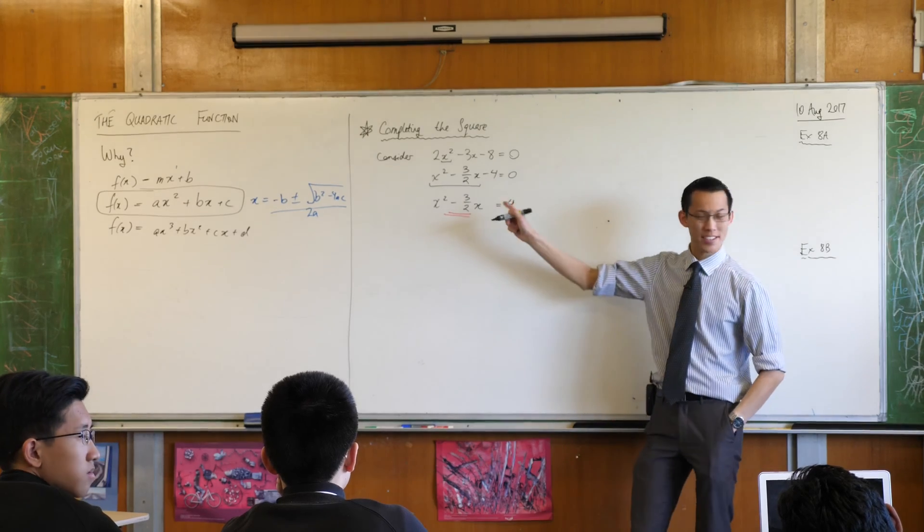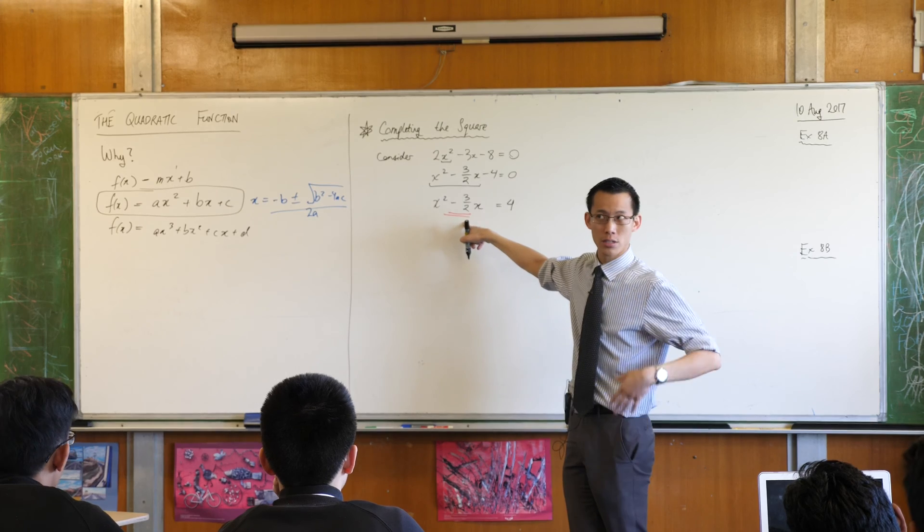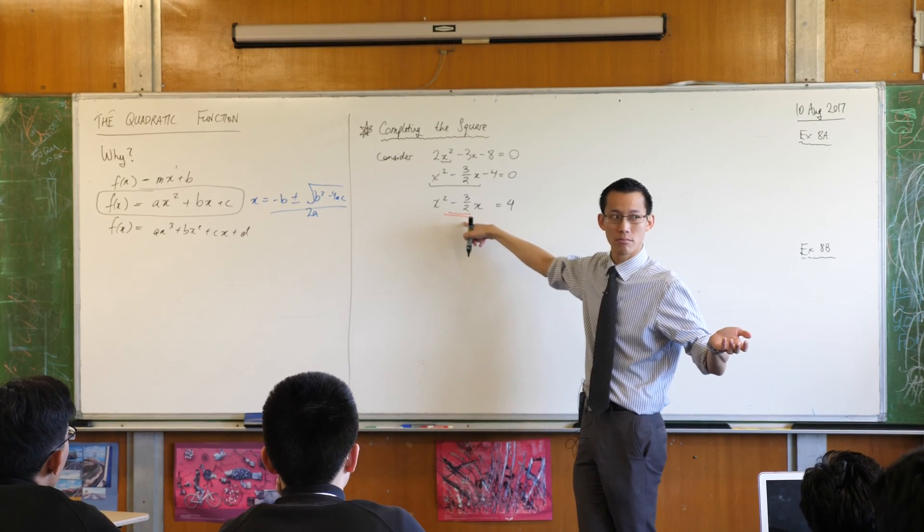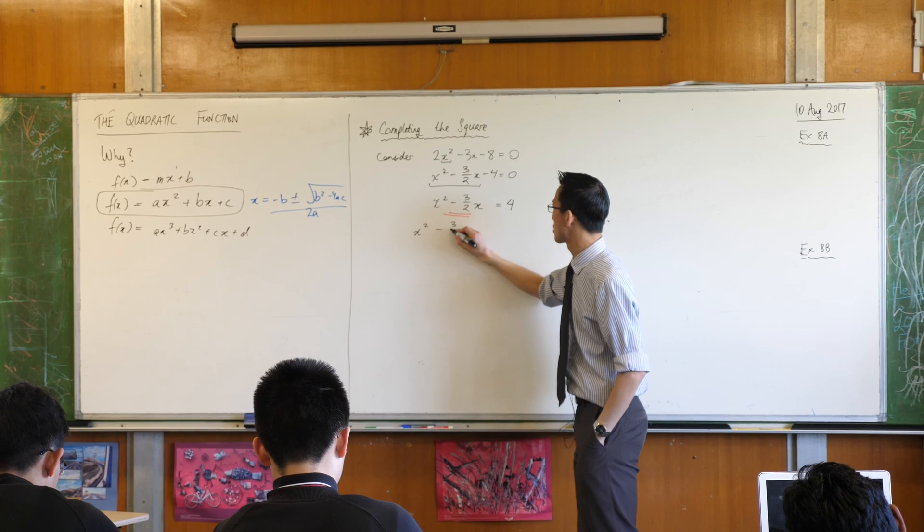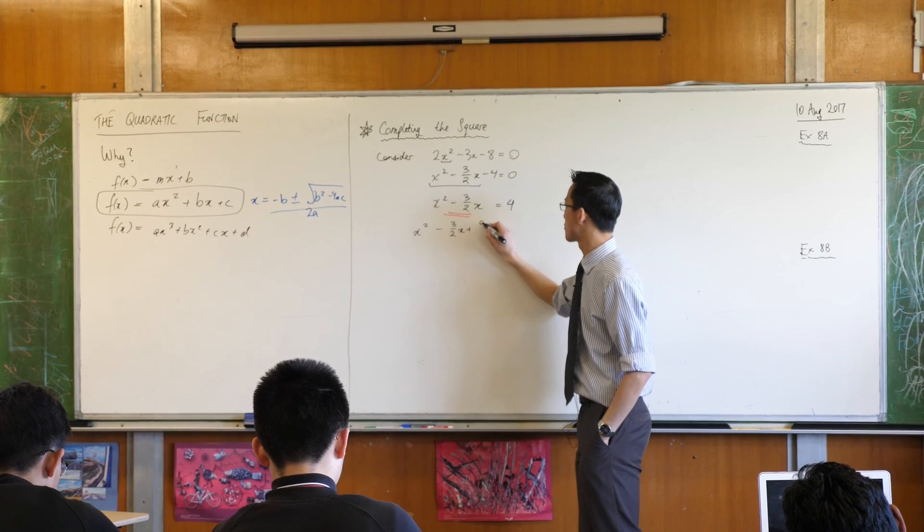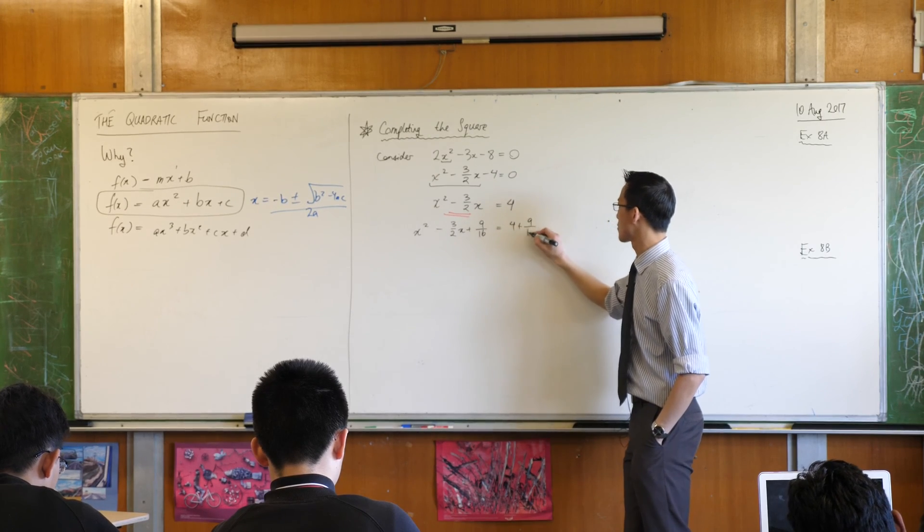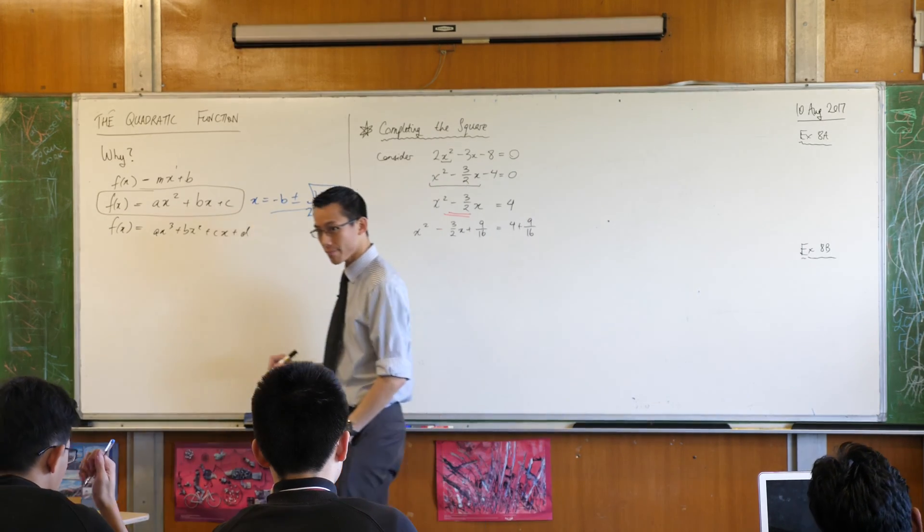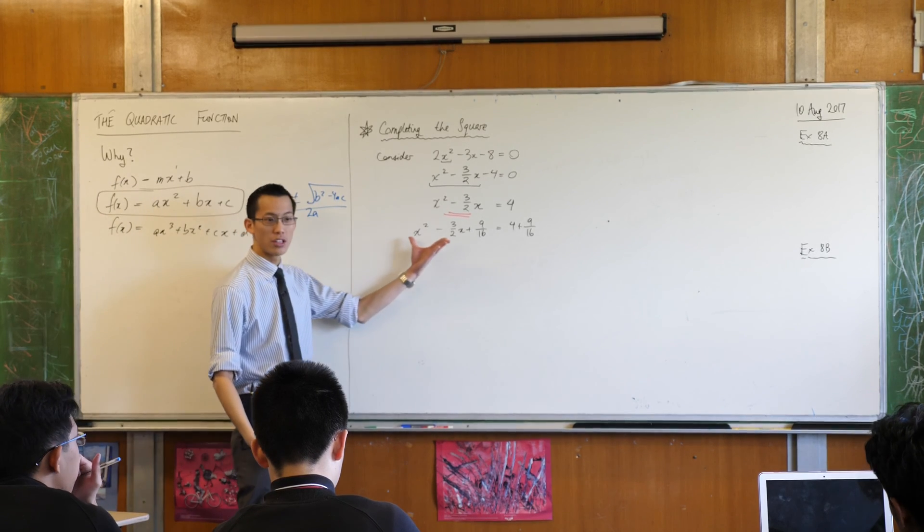So once I halve this number, this number here, I'm going to have 3 quarters, right? That's half that. So what's the square of that? 9 over 16. So I'm going to write this, like so.